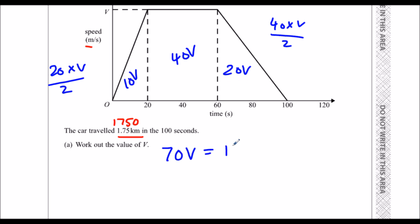And that equals 1750. So 7v equals 175. So how many 7s go into 175? 7s into 1 is none remainder 1, 7s into 17 is 2 remainder 3, 7s into 35 is 5. So v is 25.